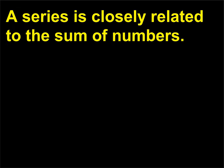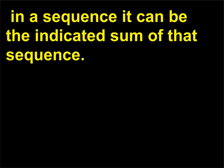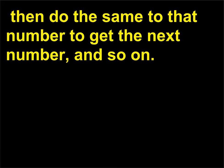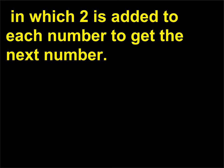What is a series? A series is closely related to the sum of numbers — it is actually used to help add numbers. In a sequence, it can be the indicated sum of that sequence. In general, the idea is to start with a number, then do something to that number to get the next number, then do the same to get the next, and so on. For example, a finite series with 6 terms is 2 + 4 + 6 + 8 + 10 + 12, in which 2 is added to each number to get the next.